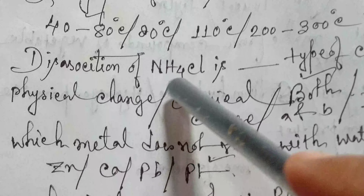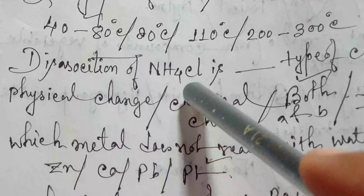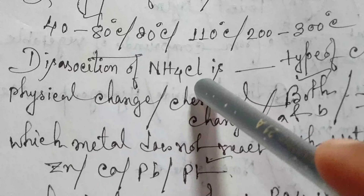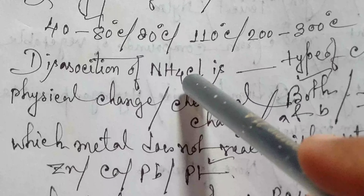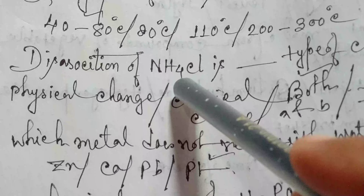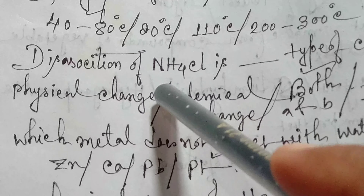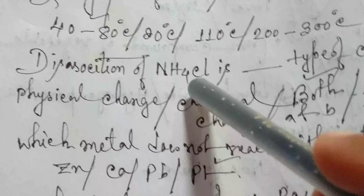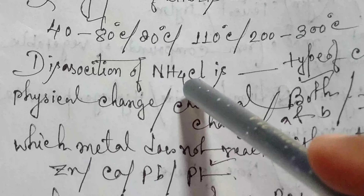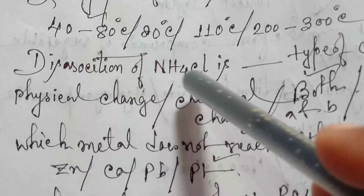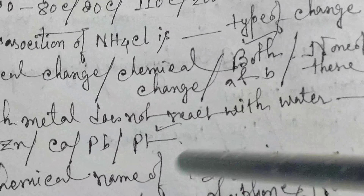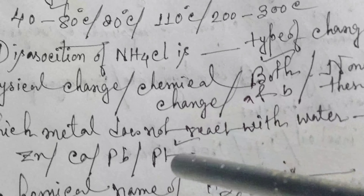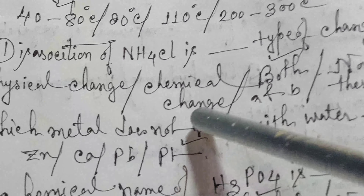Because the sublimation of ammonium chloride is a physical change, whereas the dissociation of ammonium chloride — after it sublimes — it dissociates into ammonia and chlorine, meaning it breaks apart. That is why this change is also a chemical change. So the answer is both A and B.